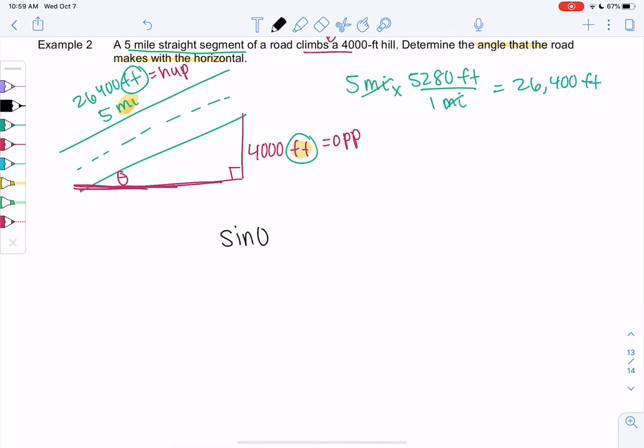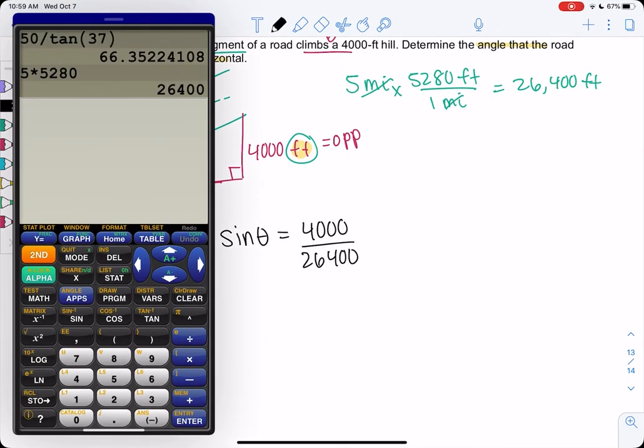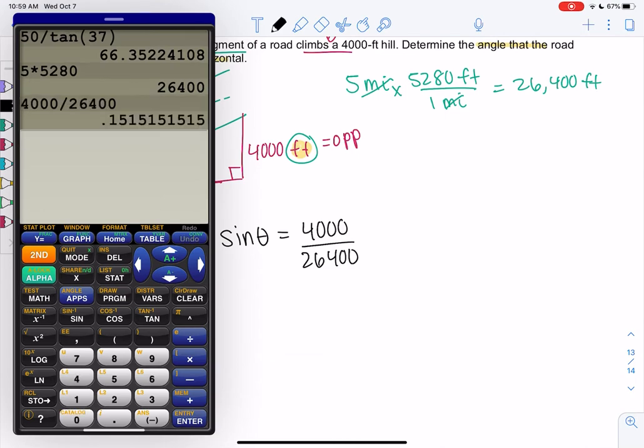So sine of theta equals 4,000 over 26,400, which is probably not that helpful. It's probably not going to be an angle we know, right? Yeah, we don't know this angle.